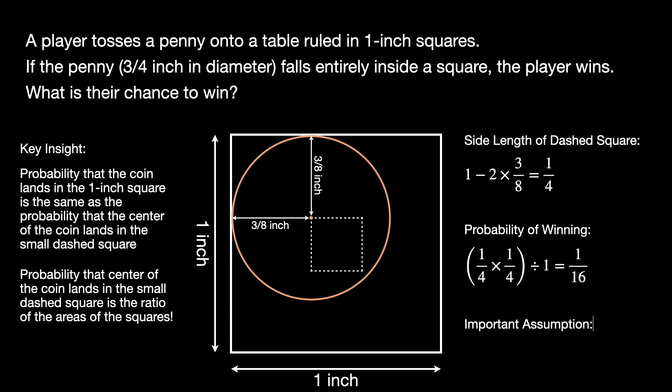Further, let's notice an important assumption that we implicitly made when we were solving this problem. We assume that the edges of the 1 inch squares on the table had no width. Of course, in reality, this is an unrealistic assumption, because in a carnival, the squares would be drawn using tape or a marker or some other medium that has finite width. Can you attempt to find what would happen to the probability of winning if we make some reasonable assumption for the width of the square's edges? How would that affect our probability of winning? Let me know down in the comments below.